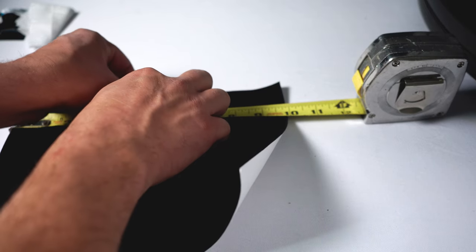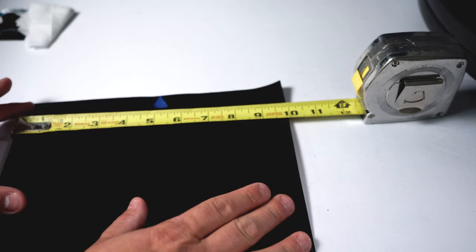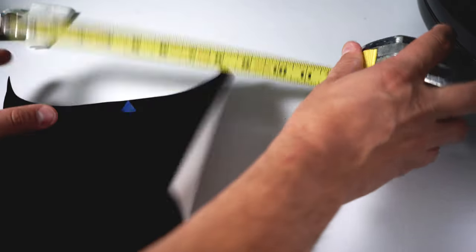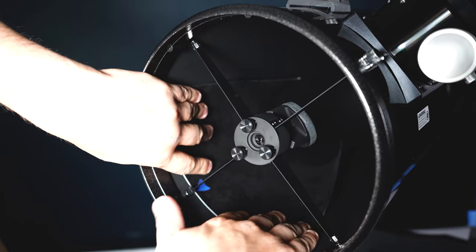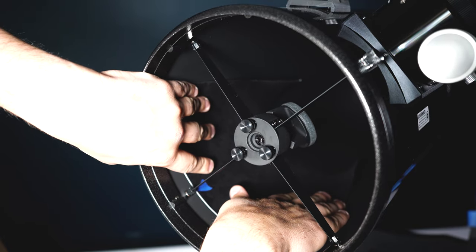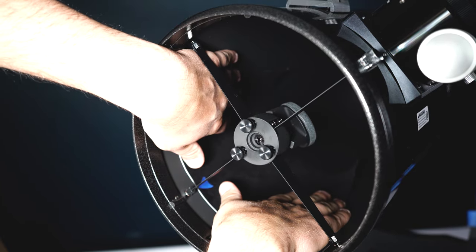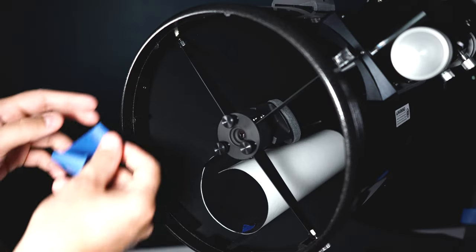Now, when you are ready to install, mark the center flocking paper itself with a piece of triangular tape. Line up the triangle with the spider vein opposite of the focuser, making sure that there is less than one eighth inch of space between the spider vein and the flocking material.